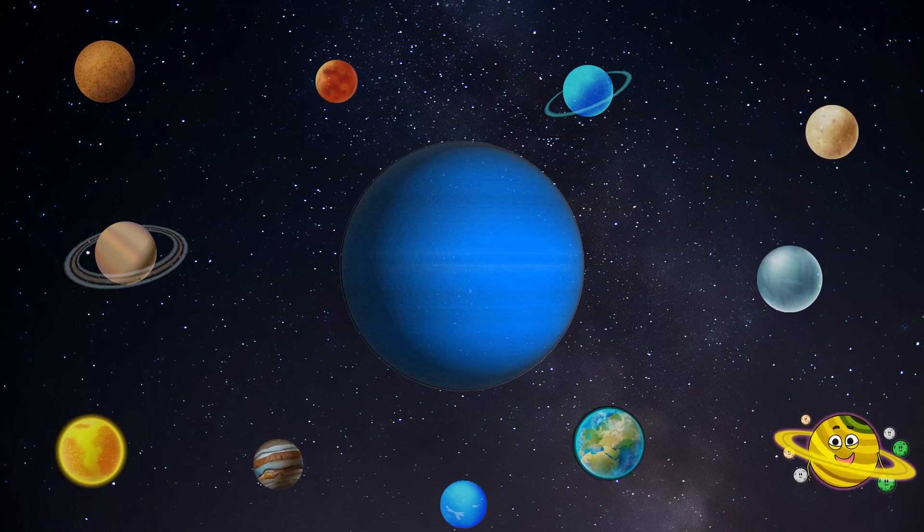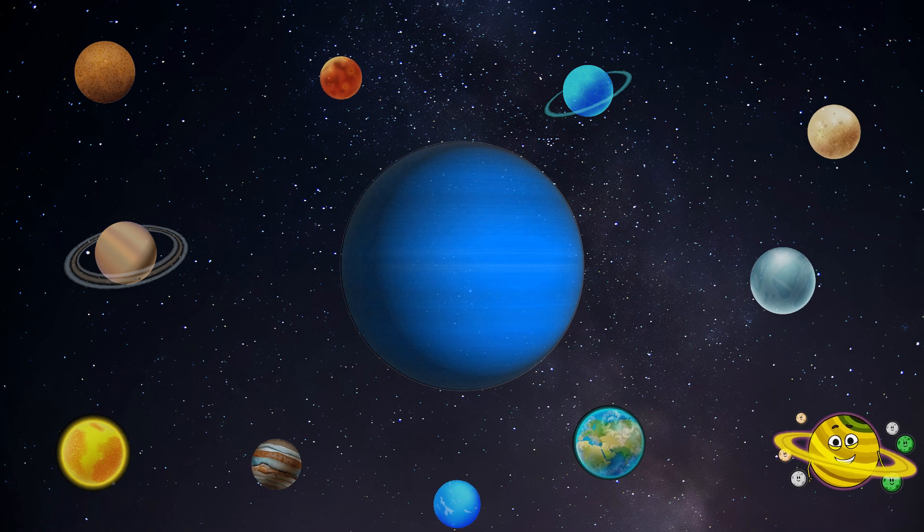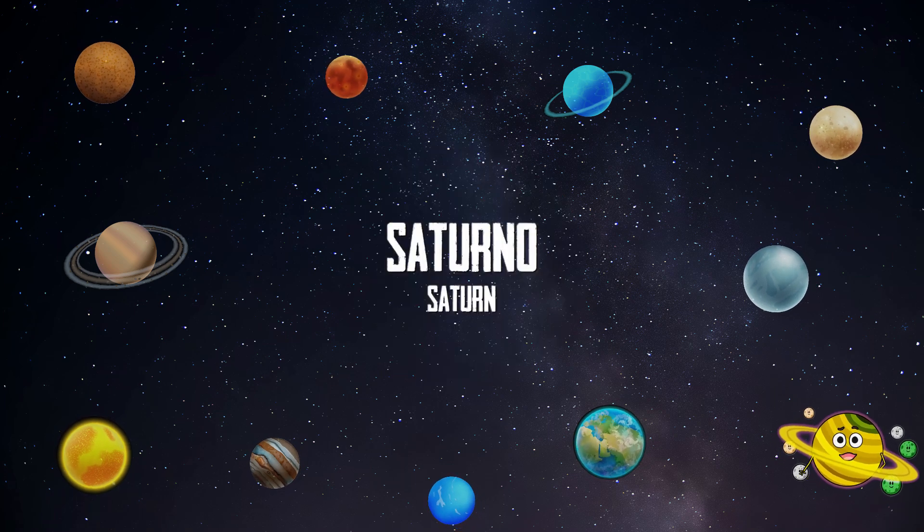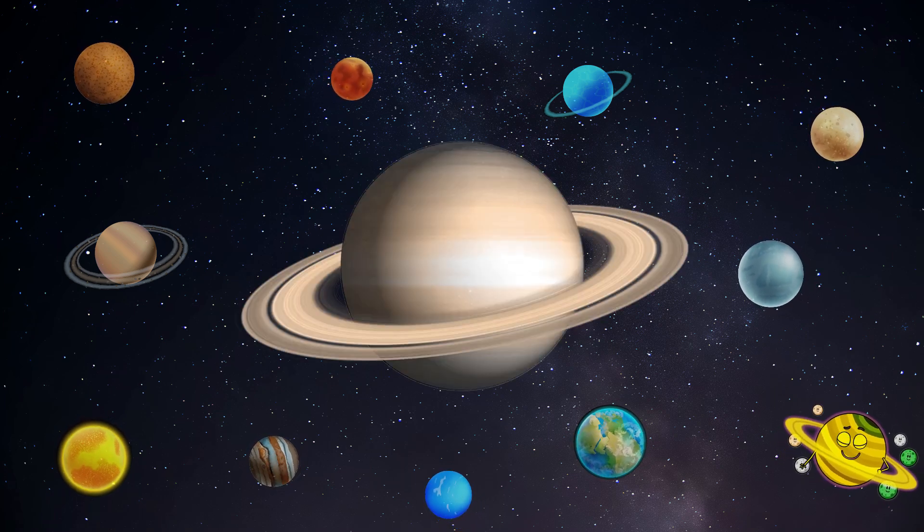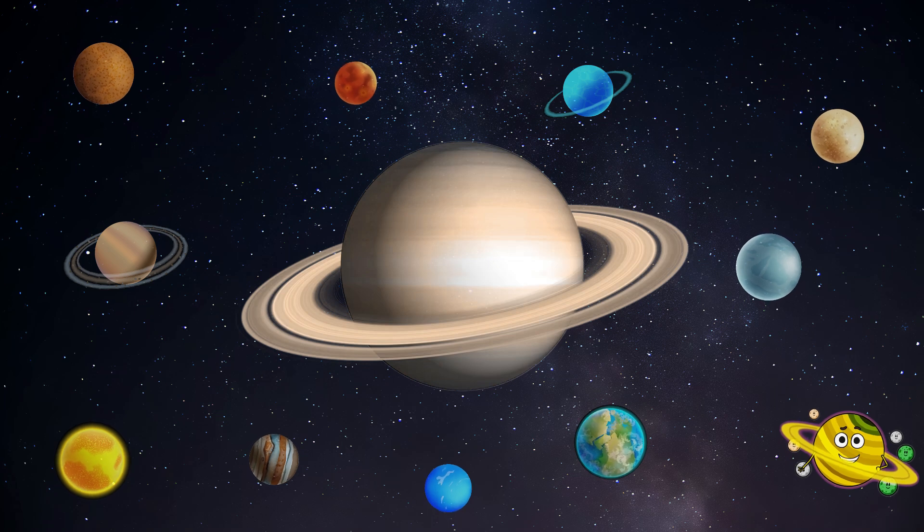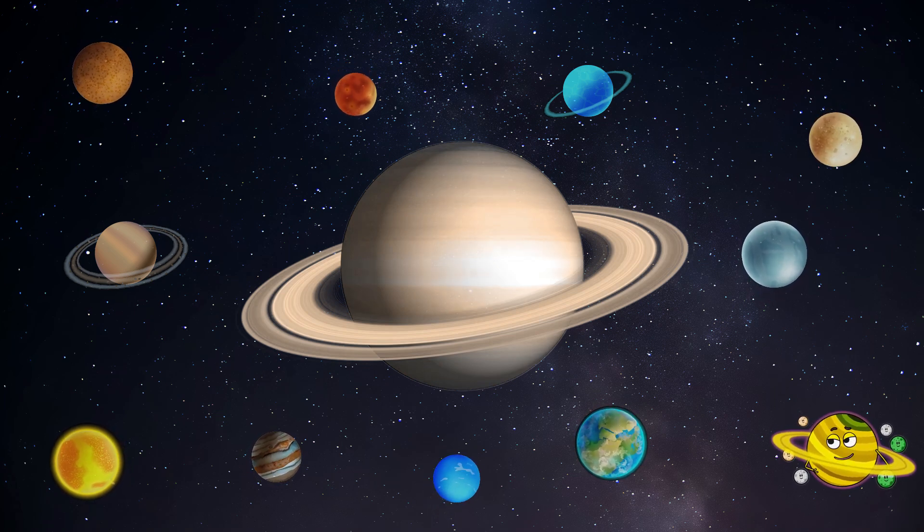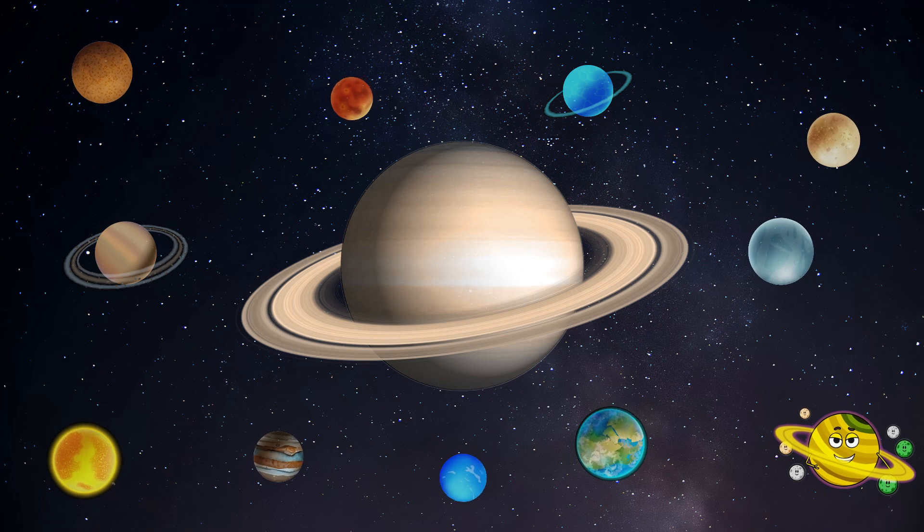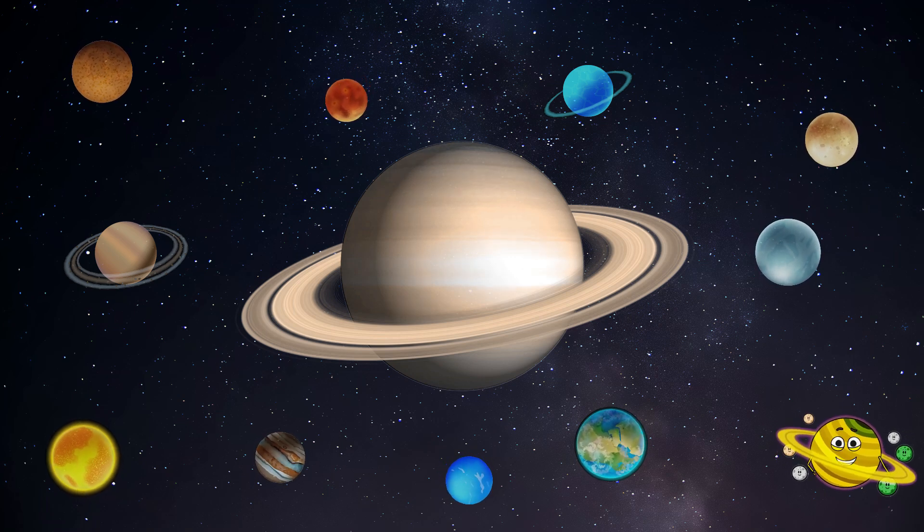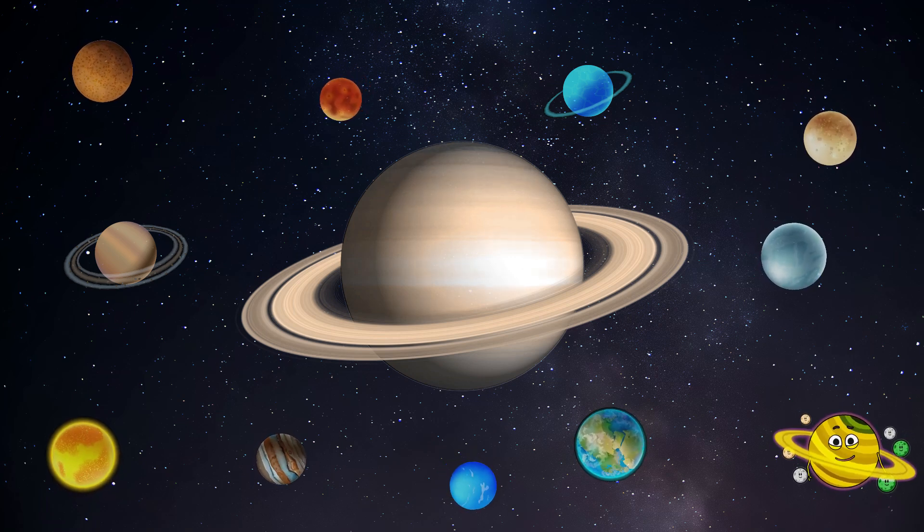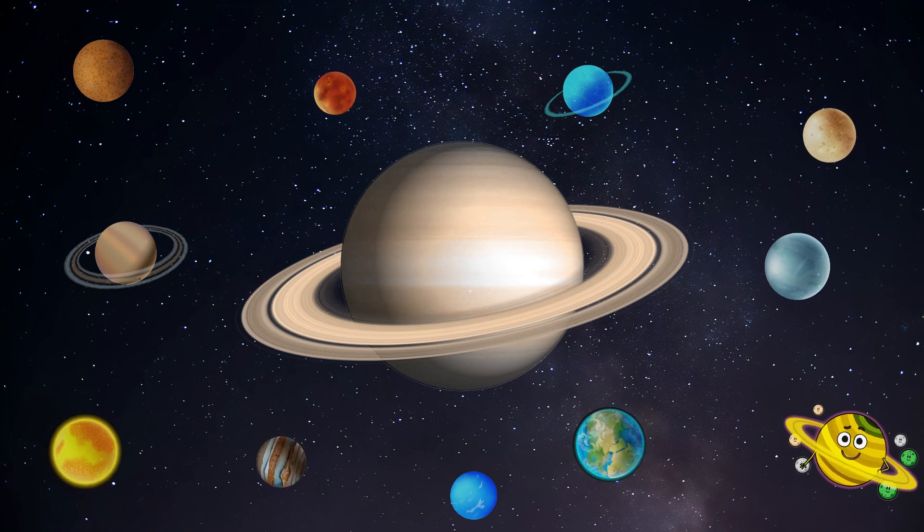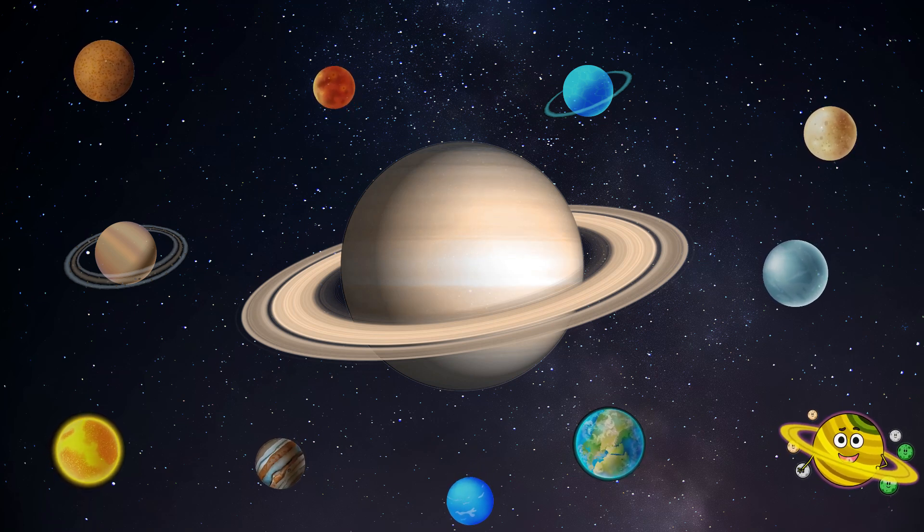Further along, we spot Saturn, the planet with beautiful rings. Saturn is like a cosmic circus, with rings made of ice and rock that sparkle in the sunlight. It's like wearing a fancy hula hoop! Saturn has lots of moons too, each one like a tiny world waiting for us to explore and play on.